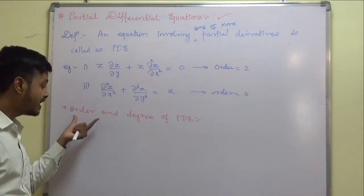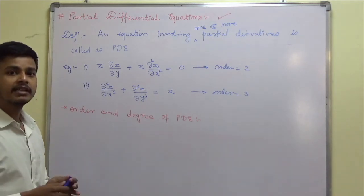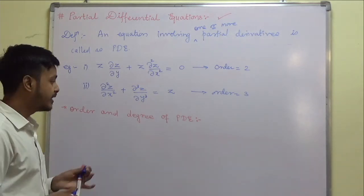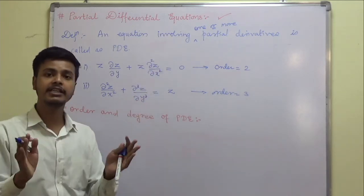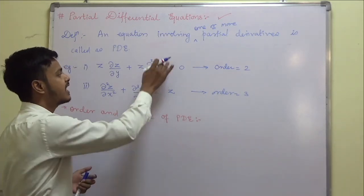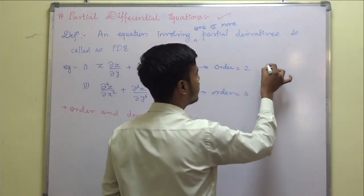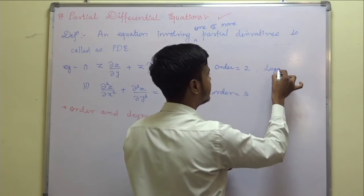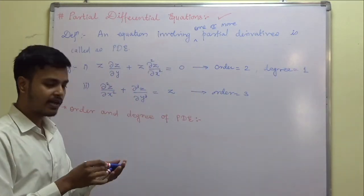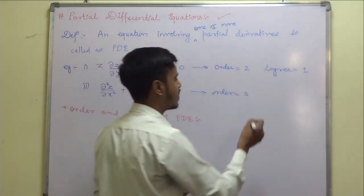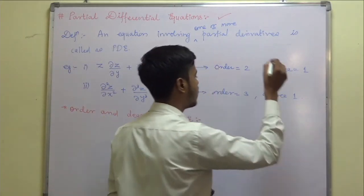Likewise, we can define the degree. The power of the highest order derivative is the degree of the PDE. When you look for the degree, find the highest order derivative and check its power. If its power is 1, then the degree is 1. So for those examples, order is 1 and degree is 1.